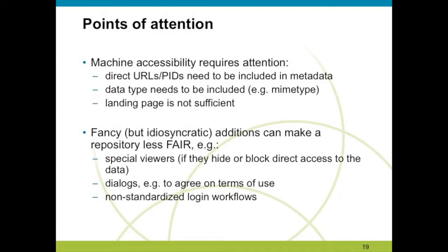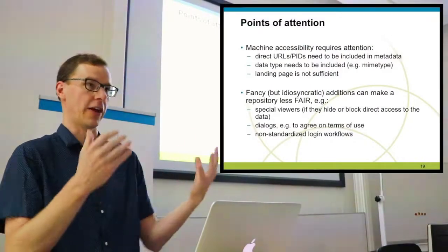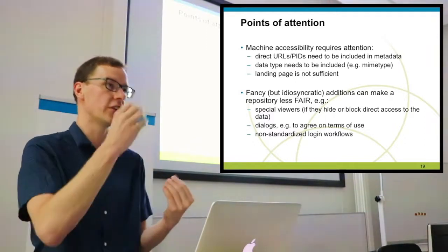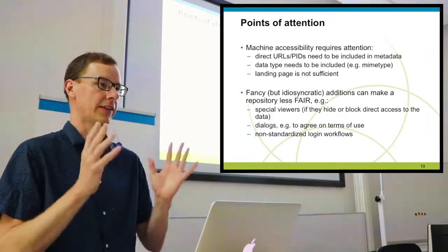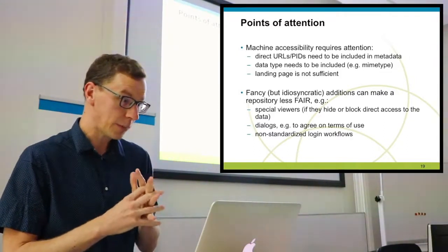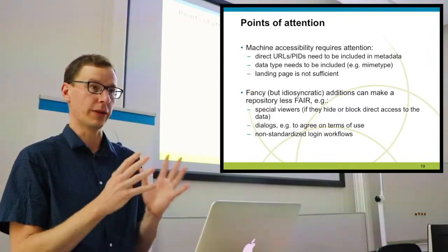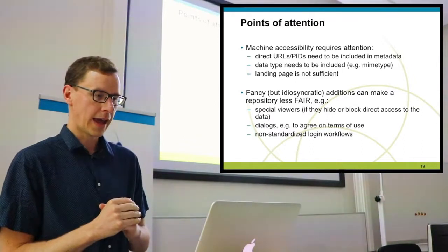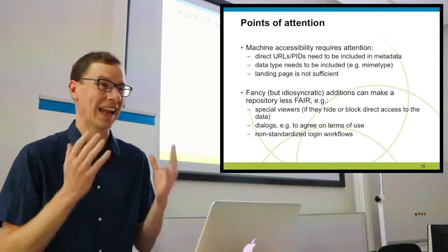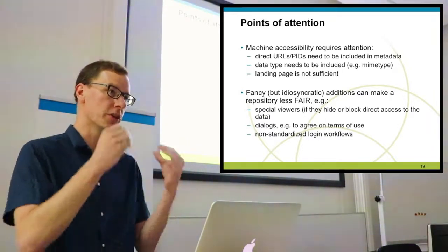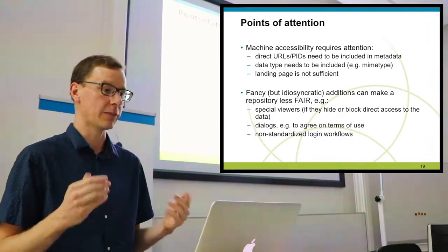Some further points of attention and lessons learned throughout the whole endeavor: machine accessibility requires specific attention. You need to have direct URLs or persistent identifiers included in the metadata — if they're not there, you'll never be able to reach the data objects. The data types need to be included — at minimum the MIME type should be available per file. It's important to be aware that just a landing page is not sufficient, since it doesn't work for automated processing.